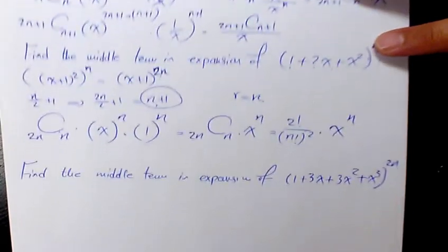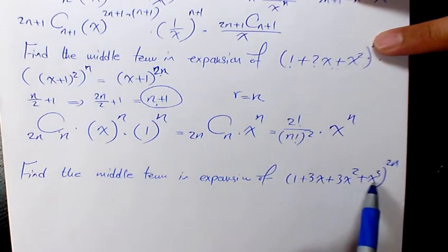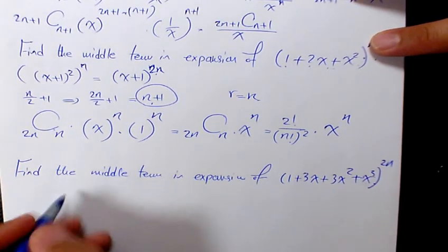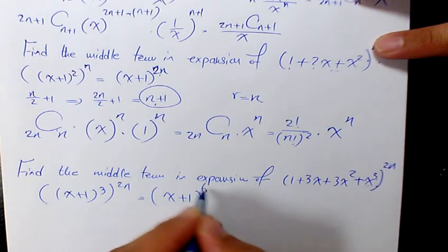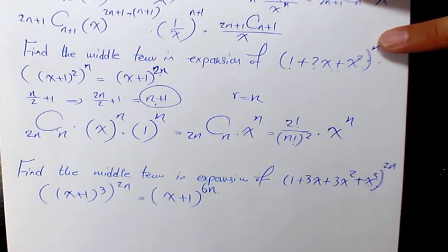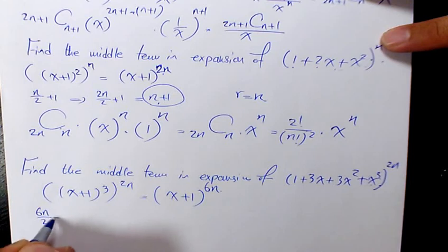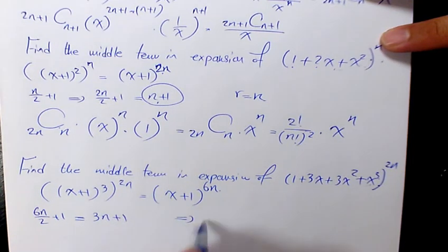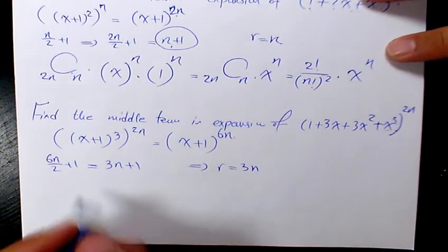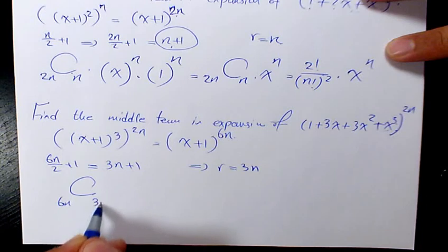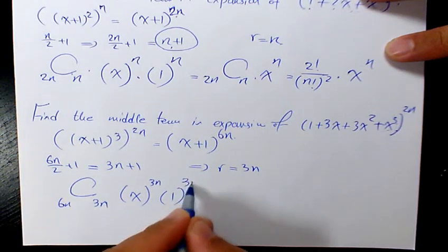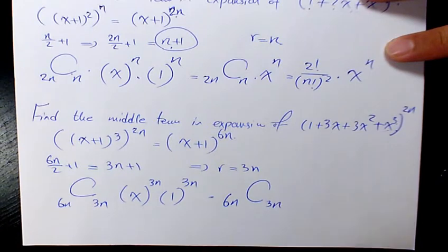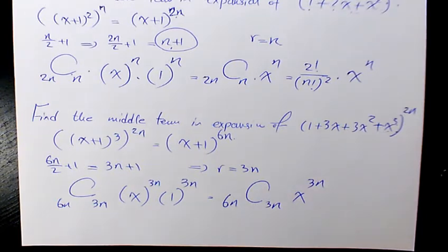The last example: find the middle term in (1 + 3x + 3x² + x³)^(2n). This expression equals (x+1)³, so raised to the power 2n it becomes (x+1)^(6n). Since 6n is even, the number of terms is odd, and the middle term is the (3n+1)th term, with r = 3n. That gives C(6n, 3n) · x^(6n−3n) · 1^(3n) = C(6n, 3n) · x^(3n). That's the final answer.